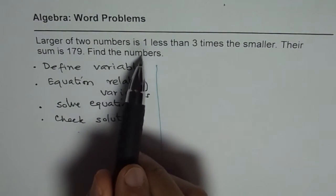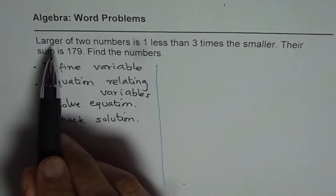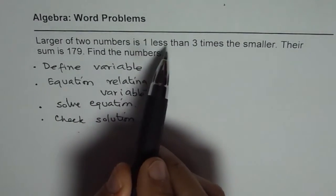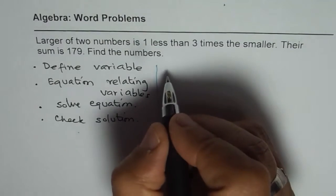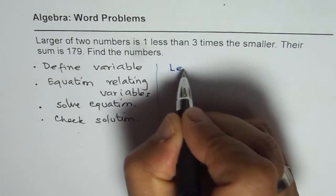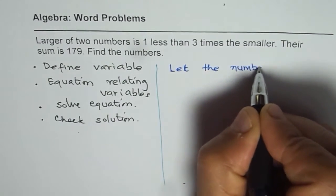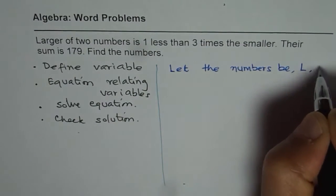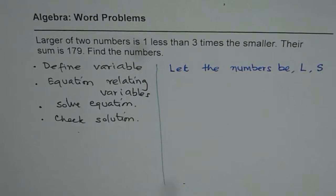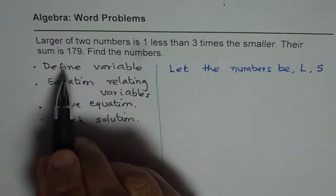What we need to find is the numbers, so we should define variables for the numbers. The first statement says there are two numbers, one is larger than the other. So it is a good idea to define variables with a let statement. Let the numbers be L and S, L for larger, S for smaller.